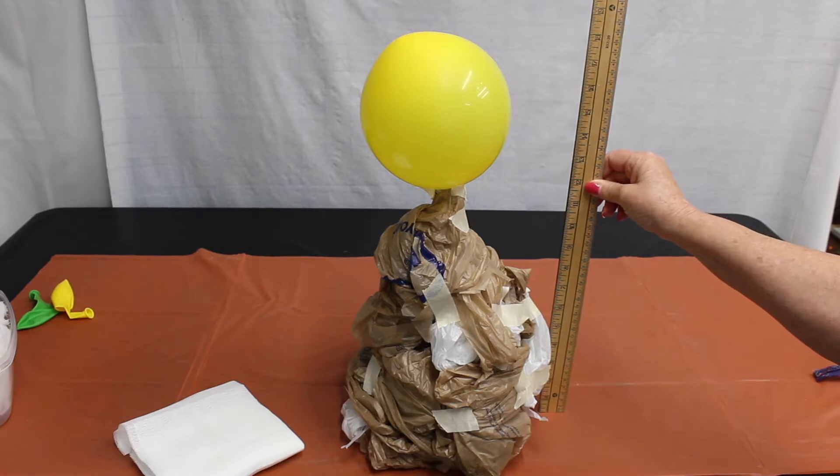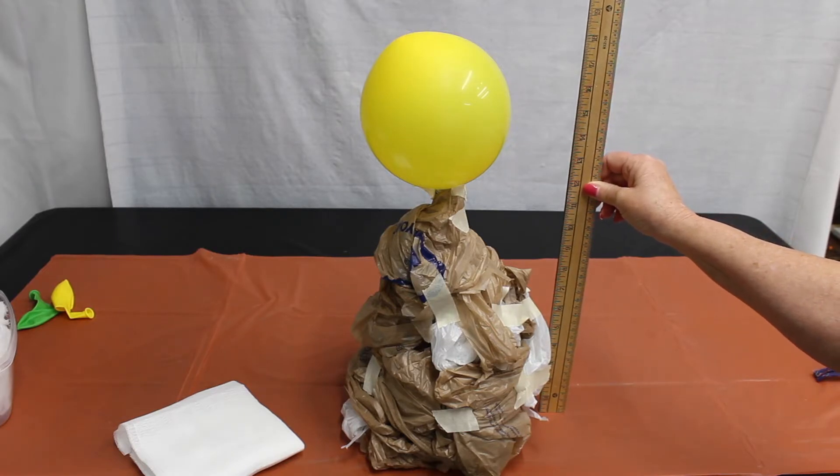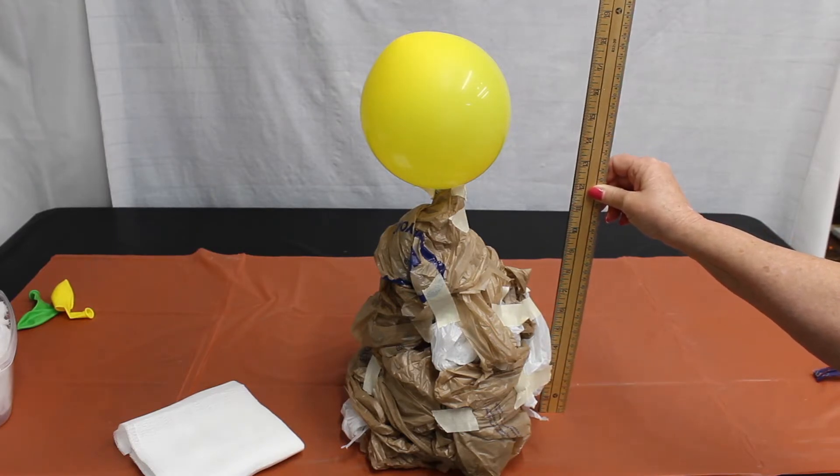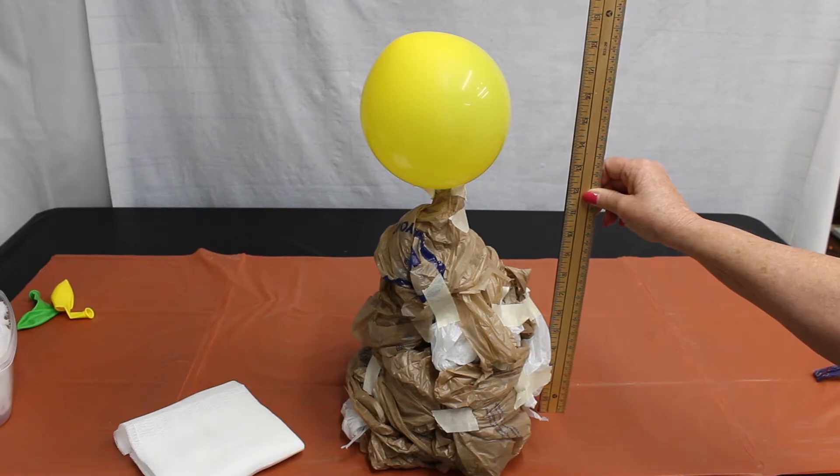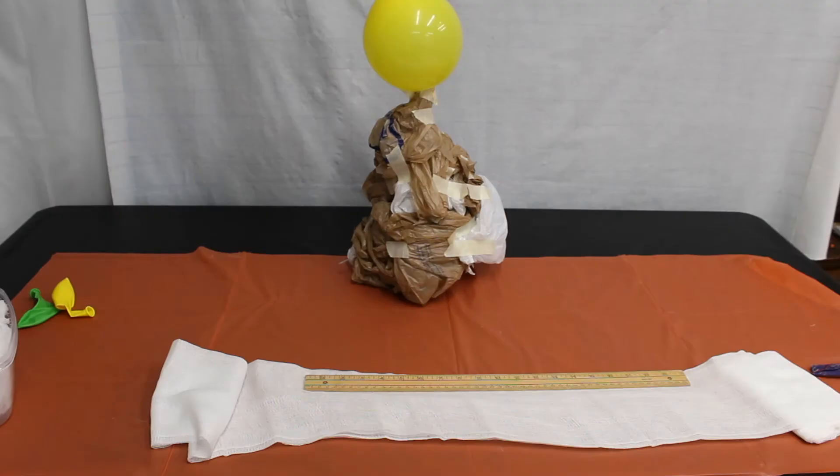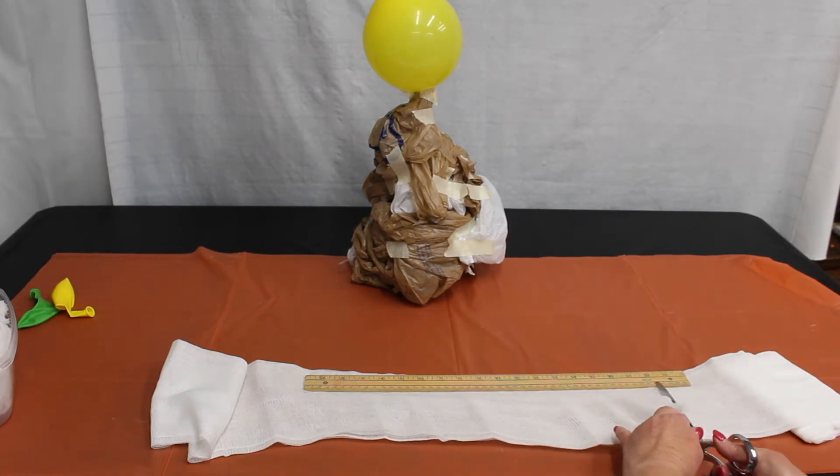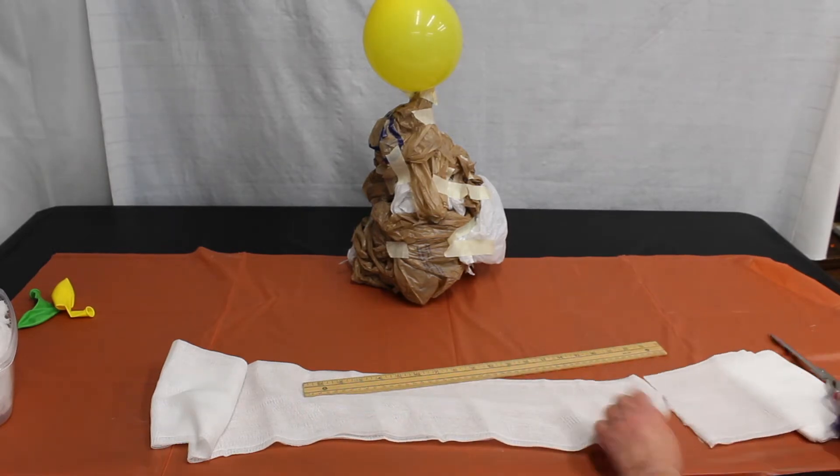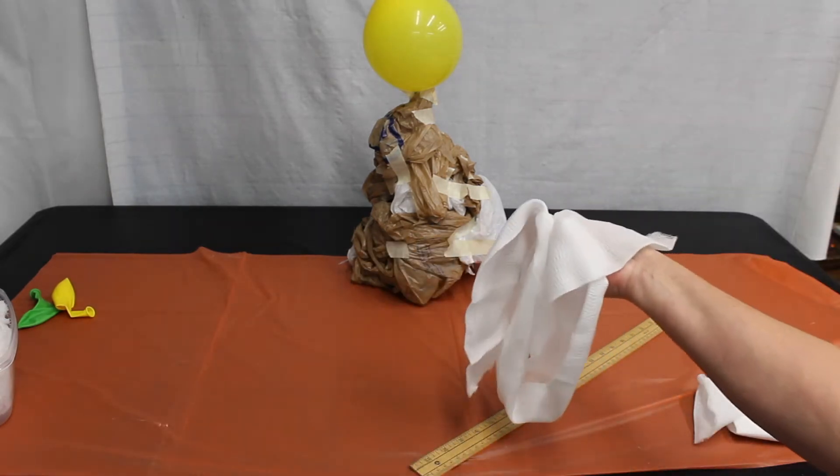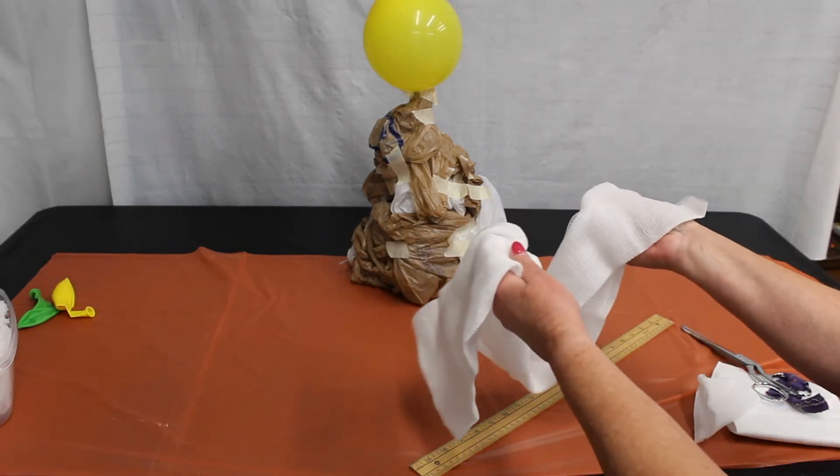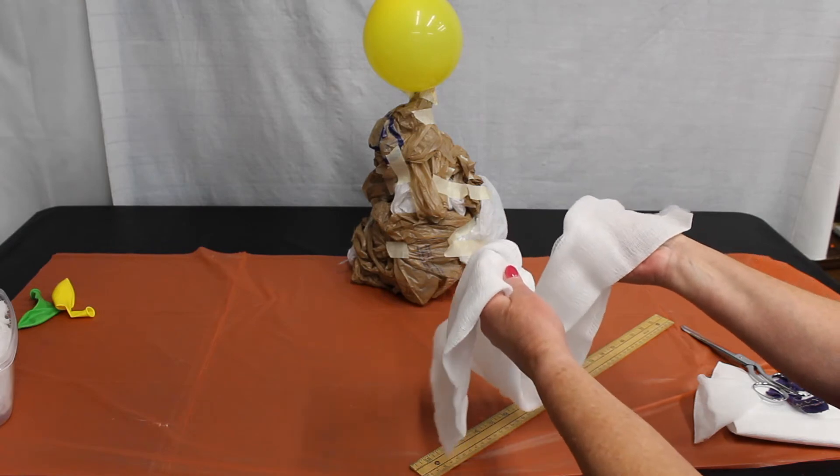I measured the top of the balloon to the bottle to see how much I need with the cheesecloth. Right now it says it's about 18 inches, so I'm going to double that and cut the fabric to that size. So this is about 36 inches that will be cut. You'll need at least two of these, possibly three of the same size.